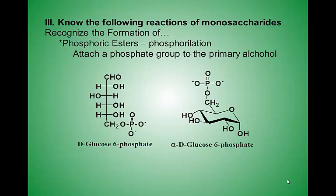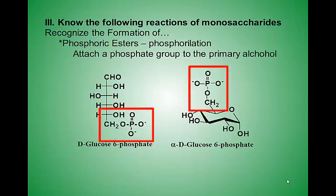And finally, phosphorylation. A phosphate group is connected to the primary alcohol in a glucose chain. Where the CH2OH was at the bottom of the chain, it has now become a CH2-phosphate group.